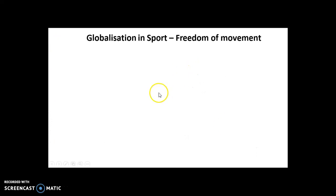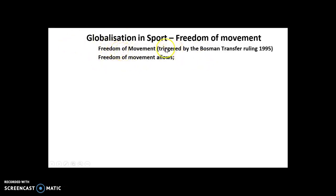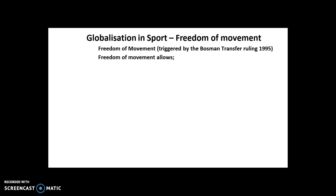The next area is the globalization of sport and its links to freedom of movement. The key trigger for freedom of movement was a Belgian football player called Marc Bosman. In 1995 — a key year, the same period as the development of professional rugby — Bosman came to the end of his contract. Previously, another team would still have to pay a fee to buy a player even out of contract. Bosman took the case to the Court of Arbitration for Sport, arguing that at the end of his contract he should be able to move for free, allowing players to receive signing-on fees and move without a transfer fee.